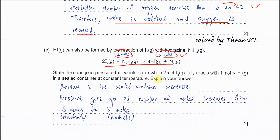State the change in pressure when two moles of iodine fully reacts with hydrazine in a sealed container at constant temperature. If the iodine fully reacts, we know it's three moles to five moles because it's complete. More moles has been formed. Therefore, the pressure in the sealed container must increase because it's formed more moles. Pressure goes up as number of moles increases from three to five.